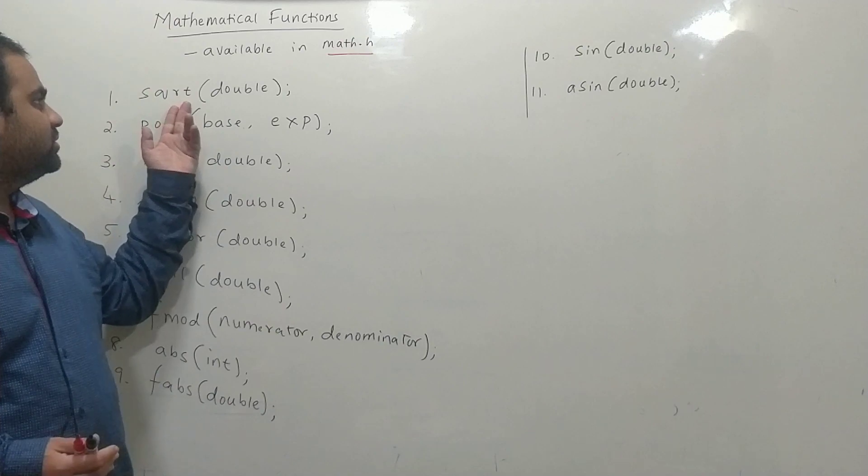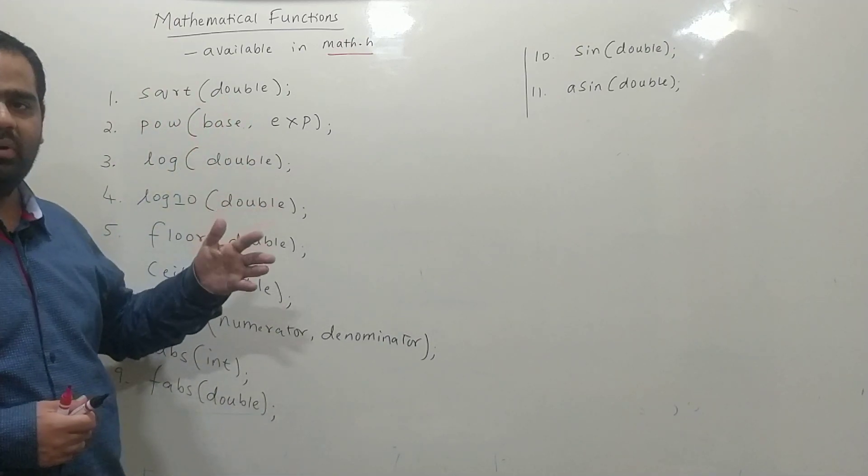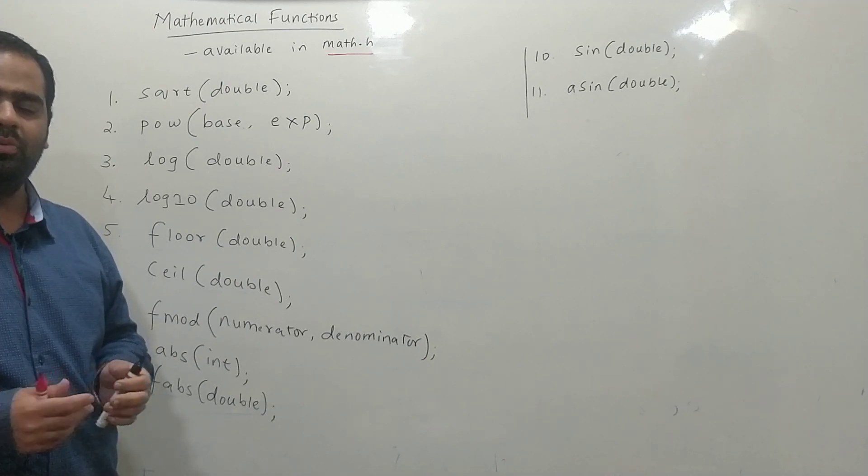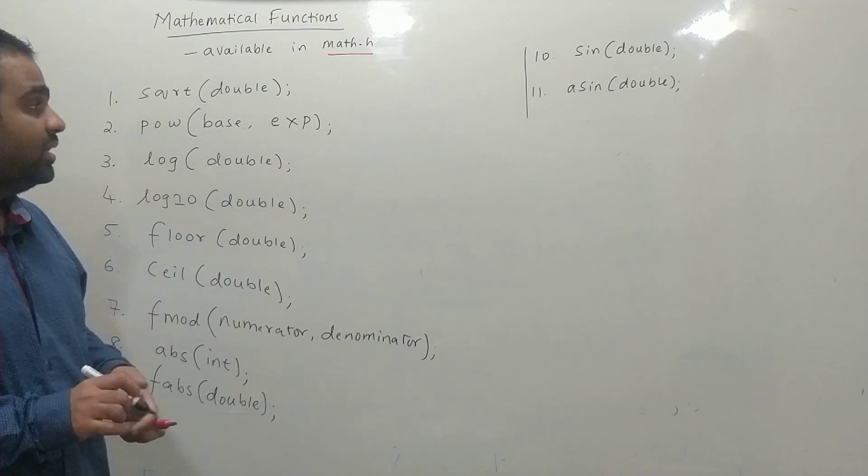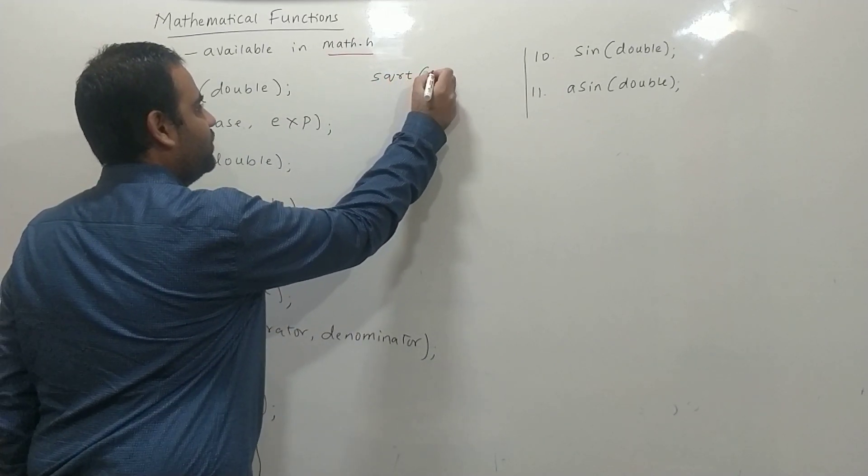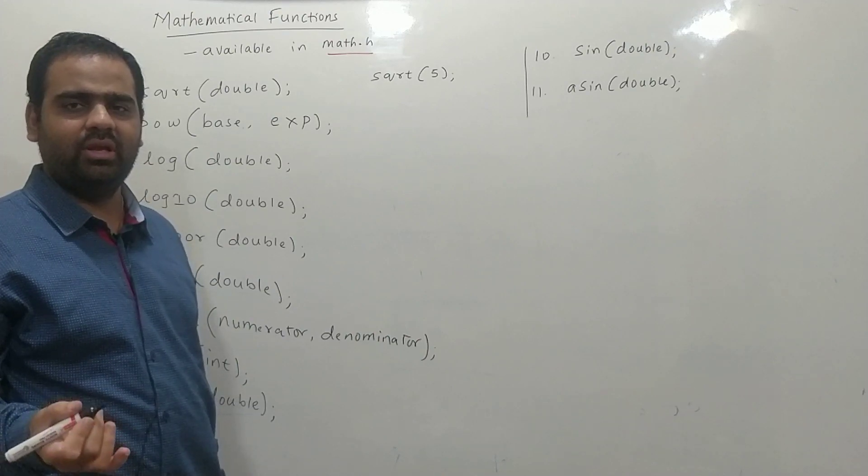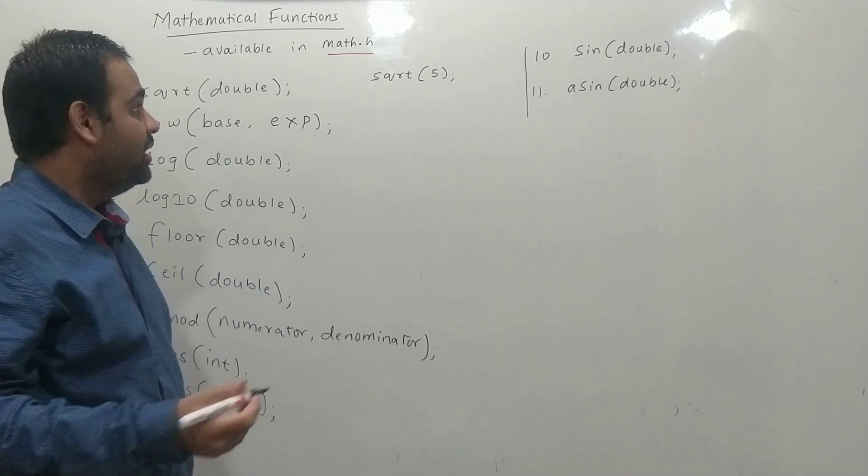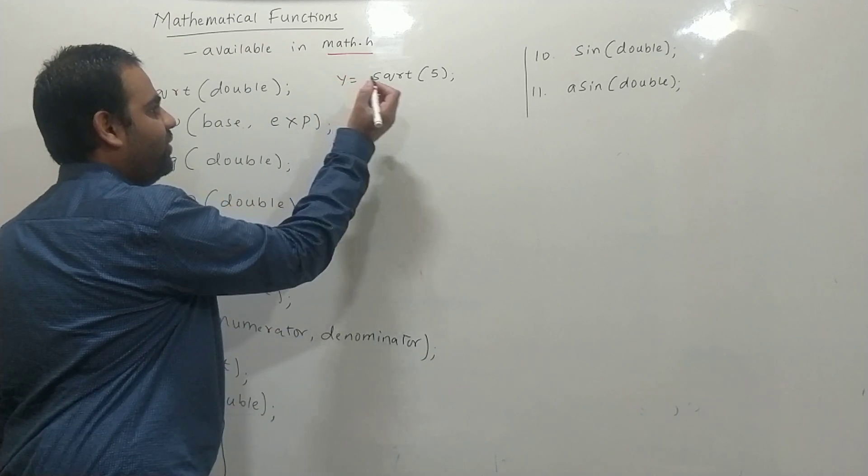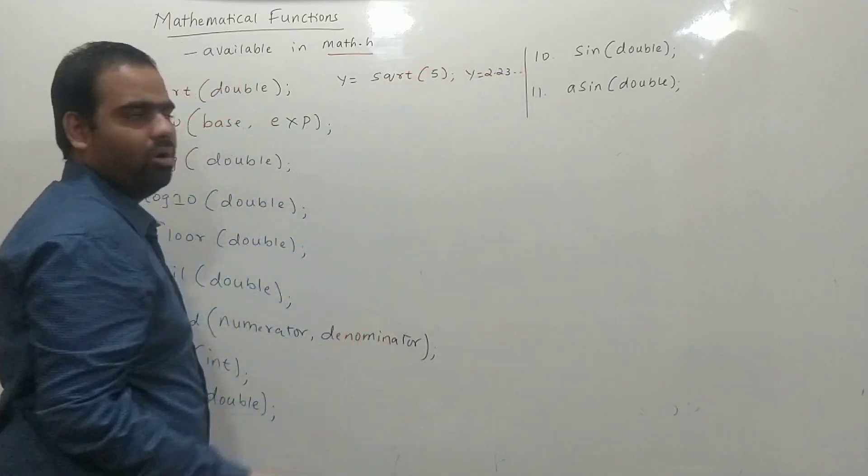Now the first function which is mostly used is sqrt. It takes any real number as input and gives the output in form of real number. For example, if we say square root of 5, it will give answer as 2.236067, and if we store it in some variable y, the value of y will be 2.23 and so on.